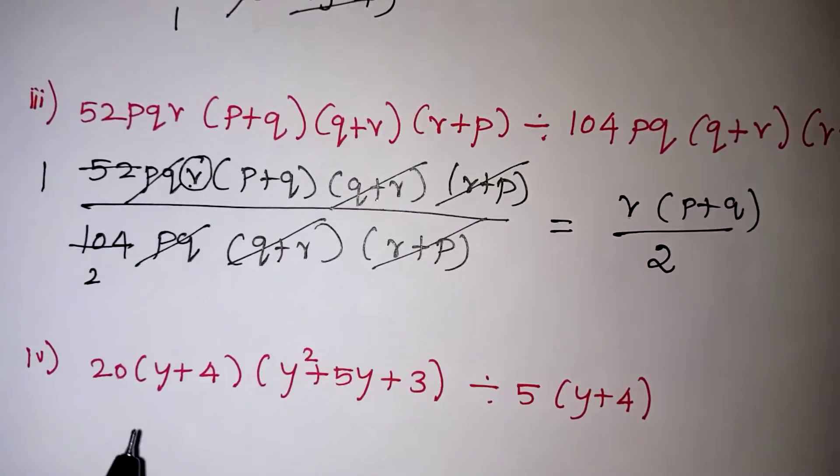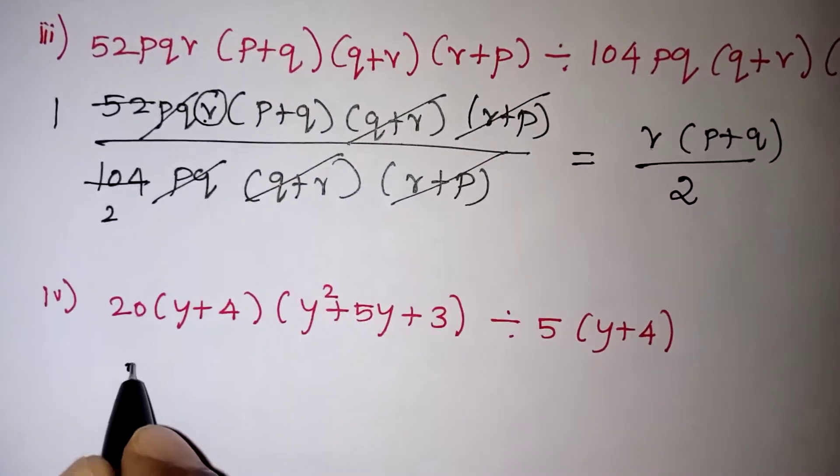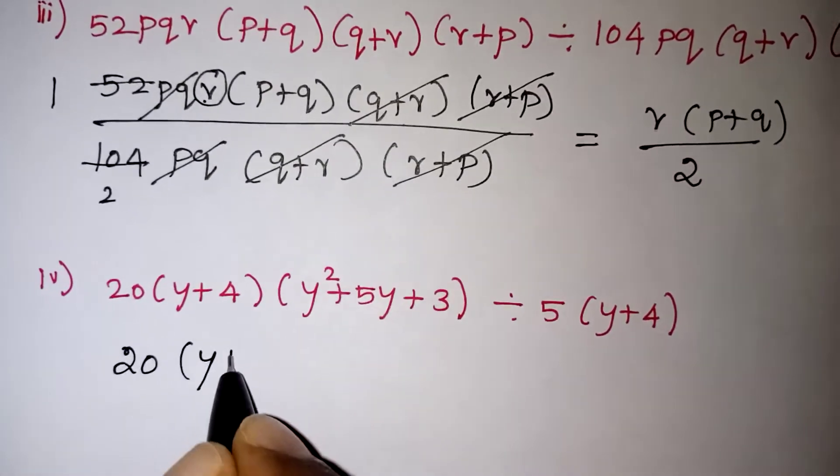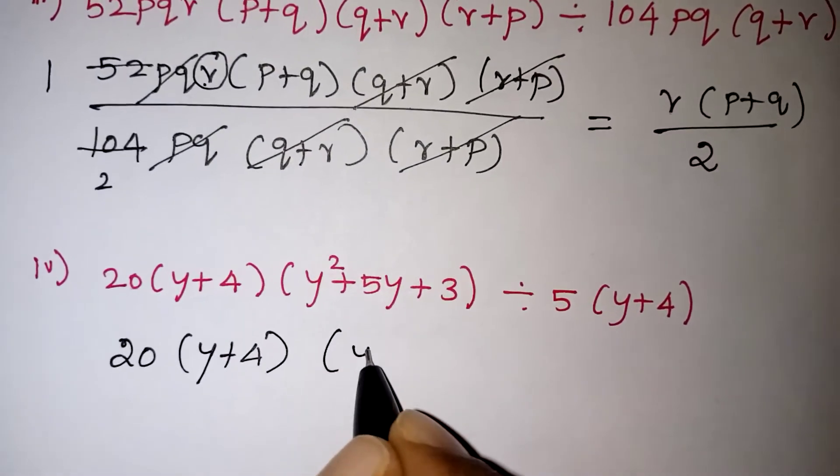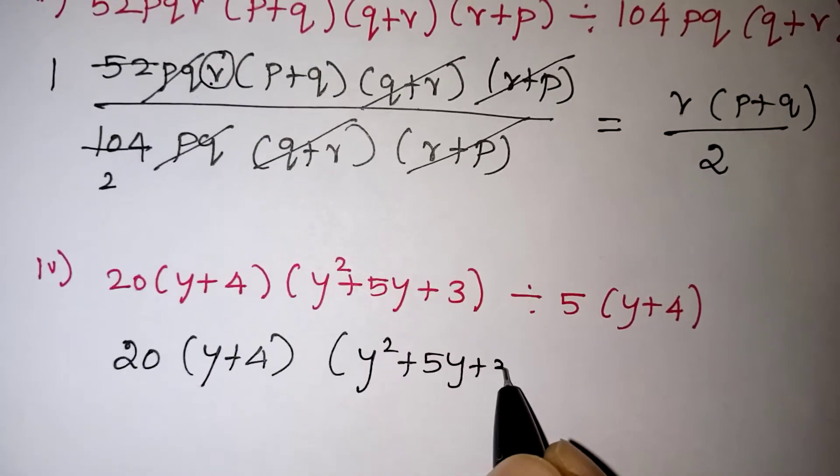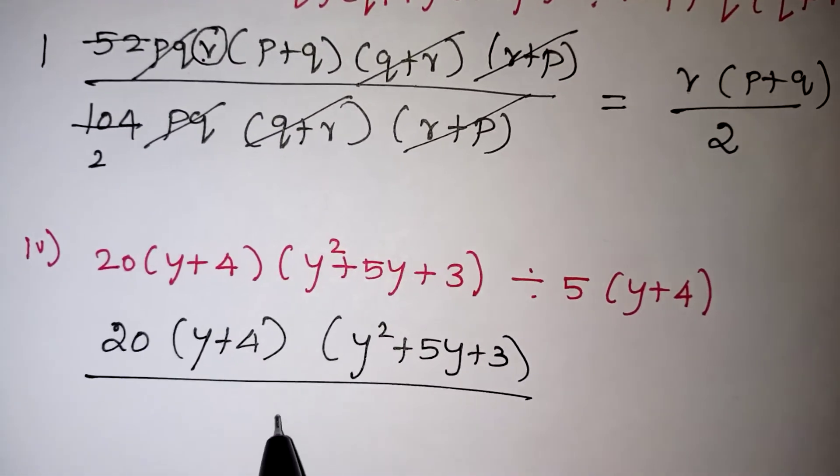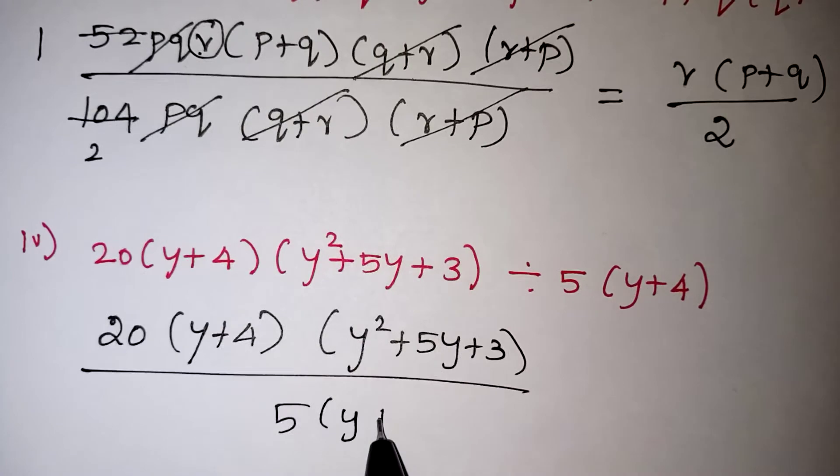Now one more problem for better understanding. Take care, the first term as a numerator: 20(y + 4)(y² + 5y + 3) divided by 5(y + 4).